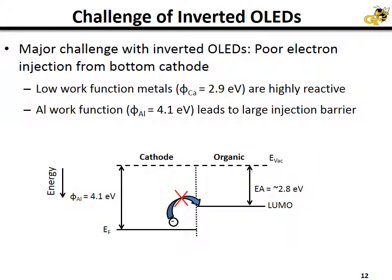Historically, there has been a major challenge in making highly efficient inverted OLEDs — specifically the difficulty of injecting electrons into the device. A typical organic semiconductor will have an electron affinity of about 2.8 electron volts. In order to allow for a very small injection barrier, you can choose low work function metals like calcium or magnesium, but those are highly reactive. Using a less reactive electrode like aluminum, however, already results in a large injection barrier.